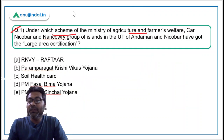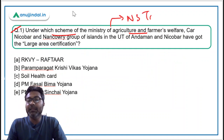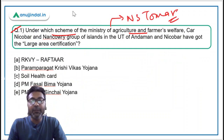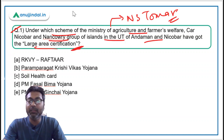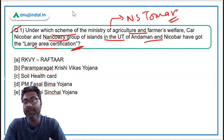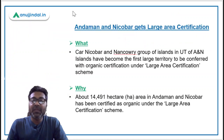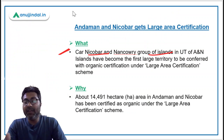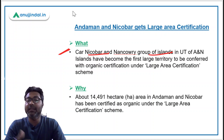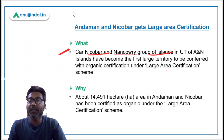Question 1: Under which scheme of the Ministry of Agriculture and Farmers Welfare, headed by Mr. Narendra Singh Tomar, have Car Nicobar and Nankauri group of islands in the UT of Andaman and Nicobar received the Large Area Certification? Car Nicobar and Nankauri group of islands have become the first large territory to be conferred with this certification, covering about 14,491 hectares identified as organic.